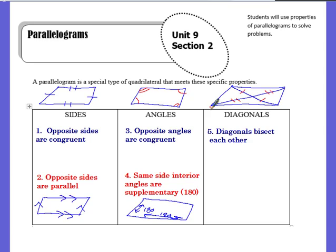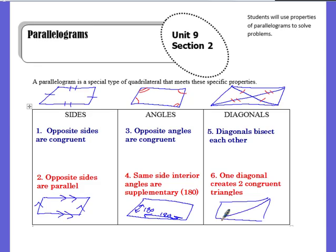The last property is if I take one diagonal across a parallelogram, it will create two congruent triangles. So we know that these sides are congruent, and then we can use the reflexive property and say those two triangles are congruent by side-side-side. And when we draw that diagonal, because the opposite angles are congruent and the sides are parallel, we can still look at things like alternate interior angles.